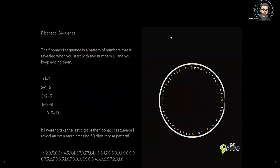So let's talk about Fibonacci. The Fibonacci sequence is a pattern of numbers that is revealed when you start with two numbers like 1,1 or 0,1 and keep adding them. So one plus one is two, two plus one is three, three plus two is five, five plus three is eight, and it keeps going on forever. What we have here is a 60-digit repeat pattern, and it comes from taking the last digit of Fibonacci. So if eight plus five is 13, we wouldn't take 13, we would take the last digit, which is three. If you get into the Fibonacci sequence to understand time, the moment that zero plus one created one is the moment that time started, and it has been going on forever.